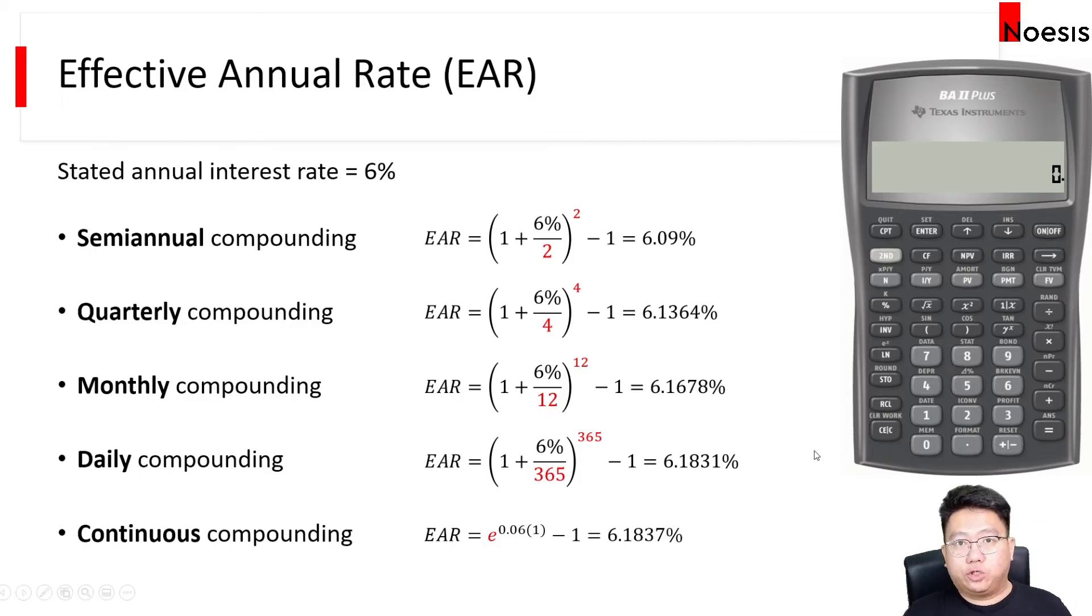In this video, I'm going to show you how to generate the Effective Annual Rate, or EAR, using the Texas BA2 Financial Calculator. In my example, I'm assuming that the stated annual interest rate is 6% per annum, and we are going to illustrate the calculation of EAR for different compounding frequencies, from semi-annual to quarterly, monthly, daily, and continuous compounding.